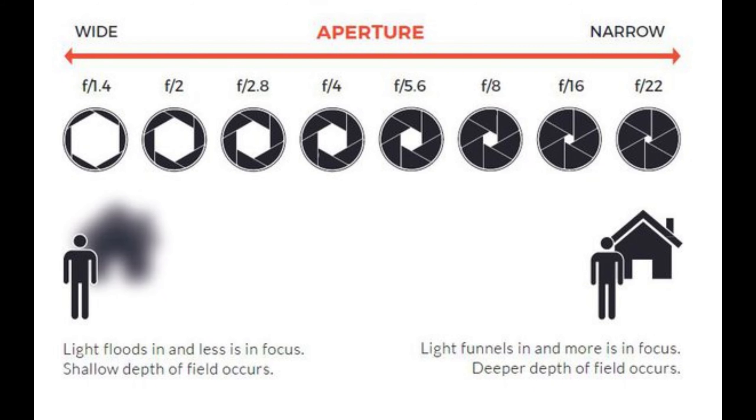For example, if you're shooting a fast-moving subject and need a fast shutter speed, you might need to open your aperture to let in more light, or increase your ISO to maintain the right exposure. These three components — ISO, aperture, and shutter speed — must work in harmony in order to create a well-exposed photo.